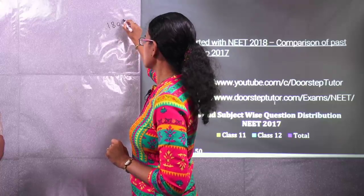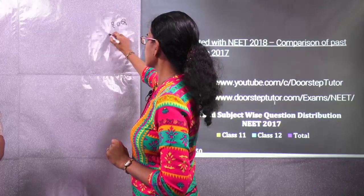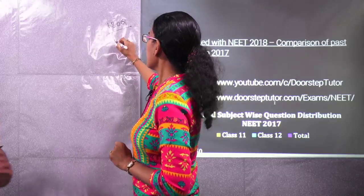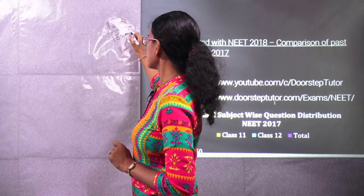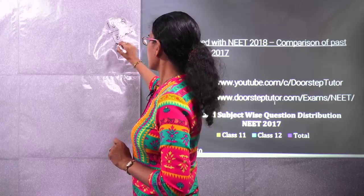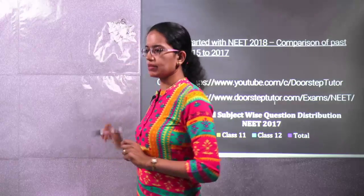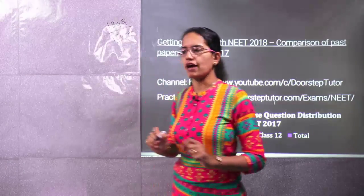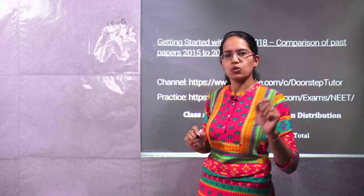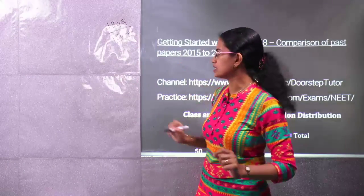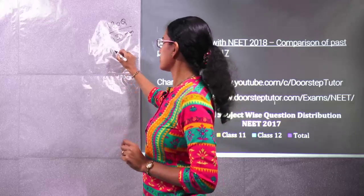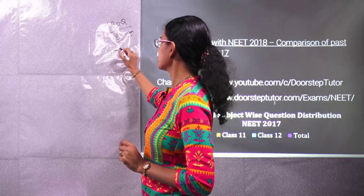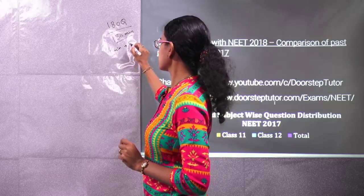Under NEAT, you would have 180 questions and the time limit would be 180 minutes. In this 180 minutes, you would have to solve 180 questions, so you would have approximately 1 minute per question.